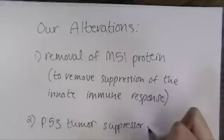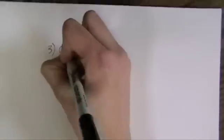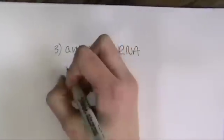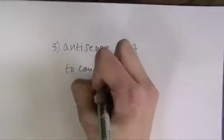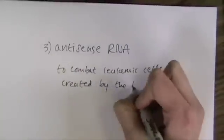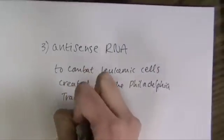We also added a p53 tumor suppressor protein. The p53 tumor suppressor protein is a natural protein that is present in normal cells, but not cancerous cells. It stops the unchecked growth of undifferentiated cells, stopping the spread of cancer.